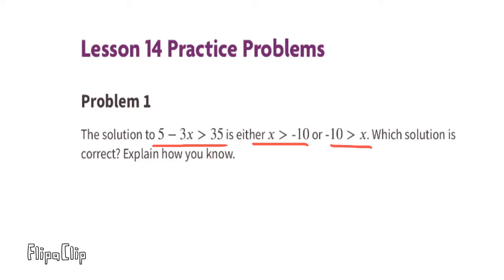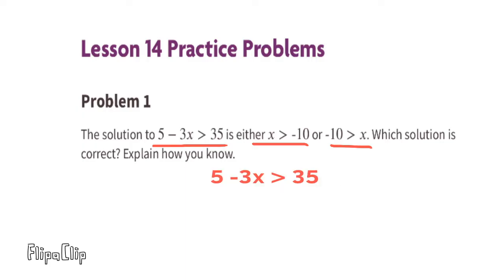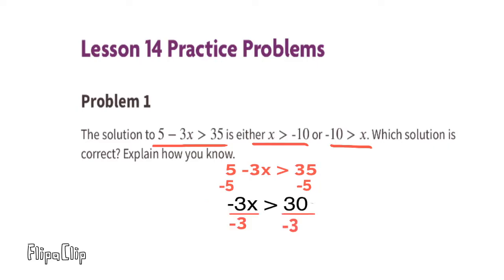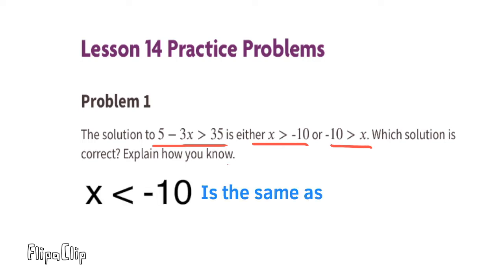The solution to 5 minus 3x is greater than 35 is either x is greater than negative 10, or negative 10 is greater than x. The correct solution is negative 10 is greater than x. Subtract 5 from both sides to get negative 3x is greater than 30. Divide both sides by negative 3 — when dividing by a negative, the inequality sign flips from greater than to less than — leaving x is less than negative 10, which can be rewritten as negative 10 is greater than x.